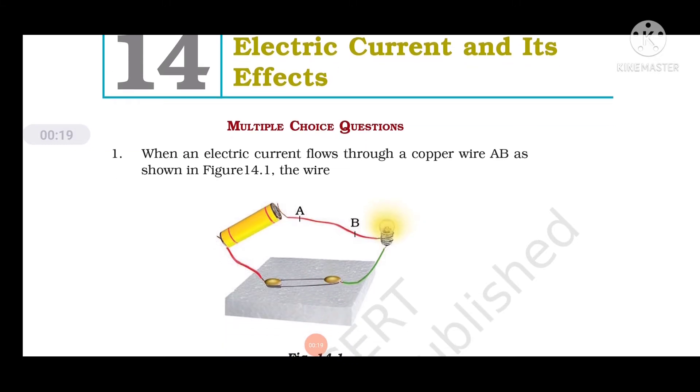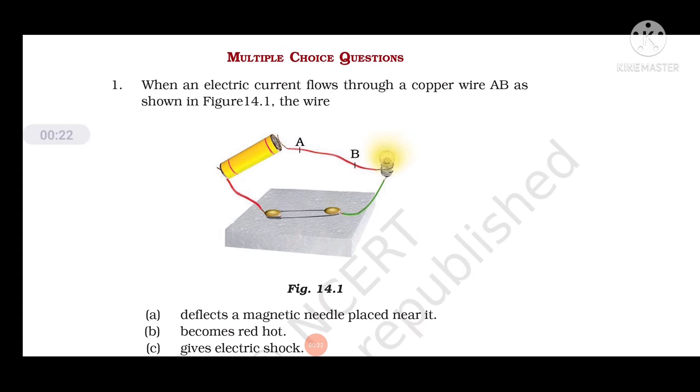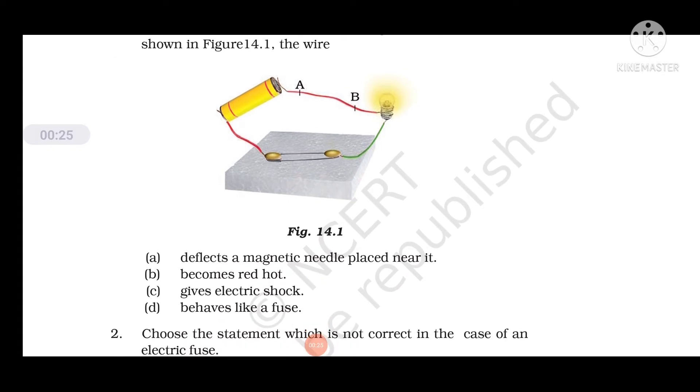Question number 1: When an electric current flows through a copper wire AB as shown in Figure 14.1, the wire deflects a magnetic needle placed near it. So option A is the correct one. Actually, when a wire carries a current, it starts behaving like a magnet with a magnetic field around it. The strength of the magnetic field depends on the amount of current which passes through it. If greater is the amount of current, then greater magnetic field will be produced, and this magnetic field creates deflection in the magnetic needle.